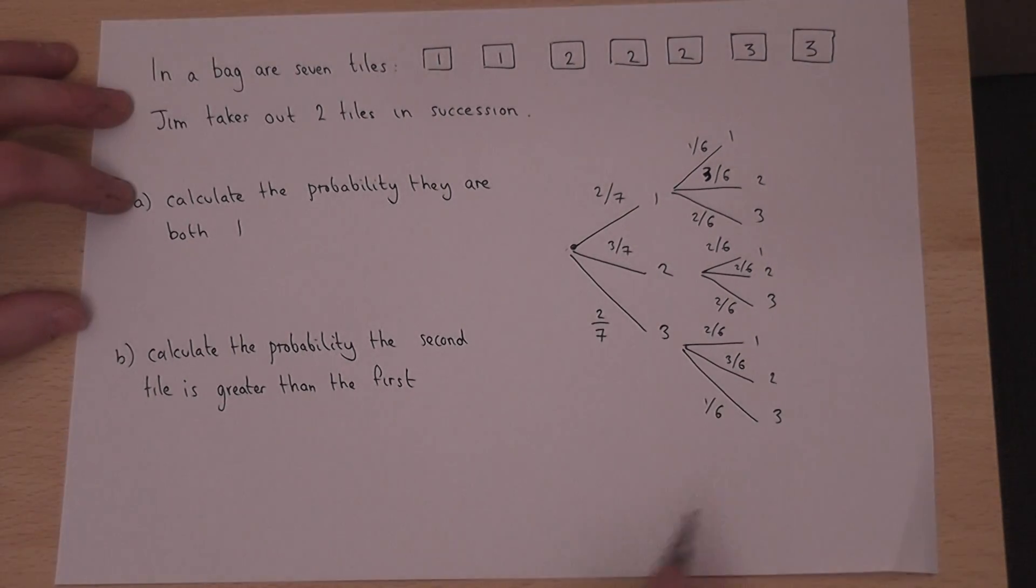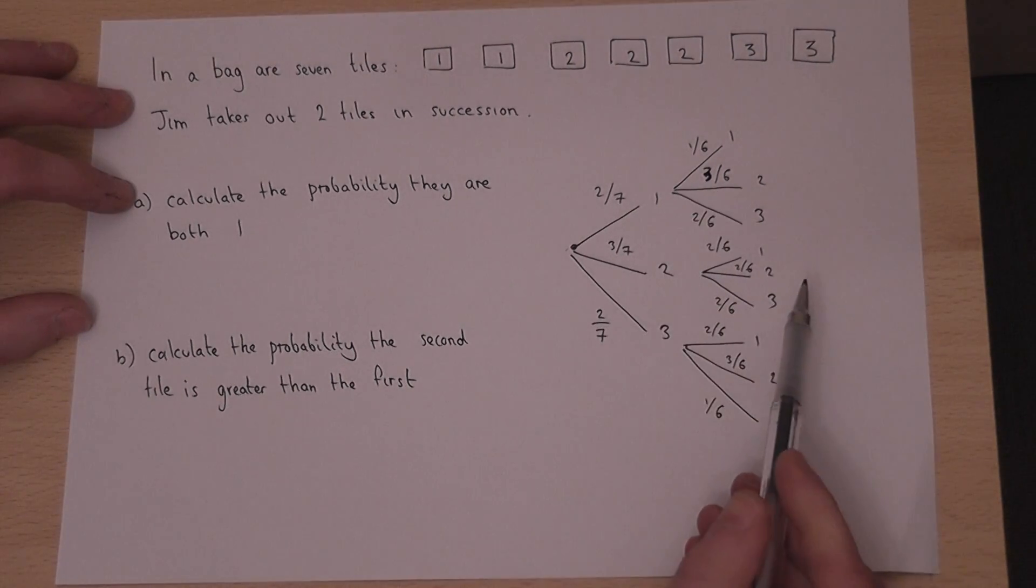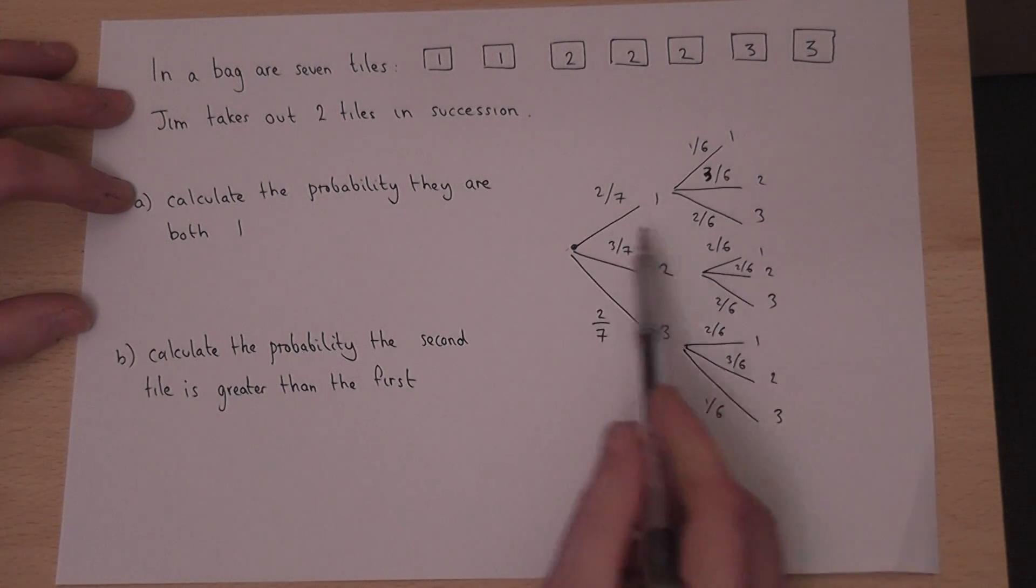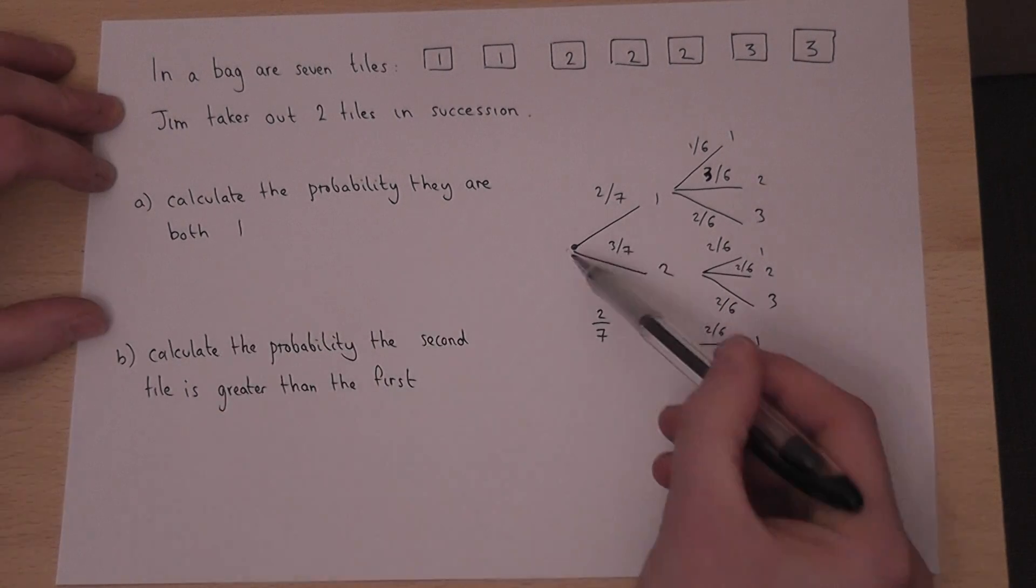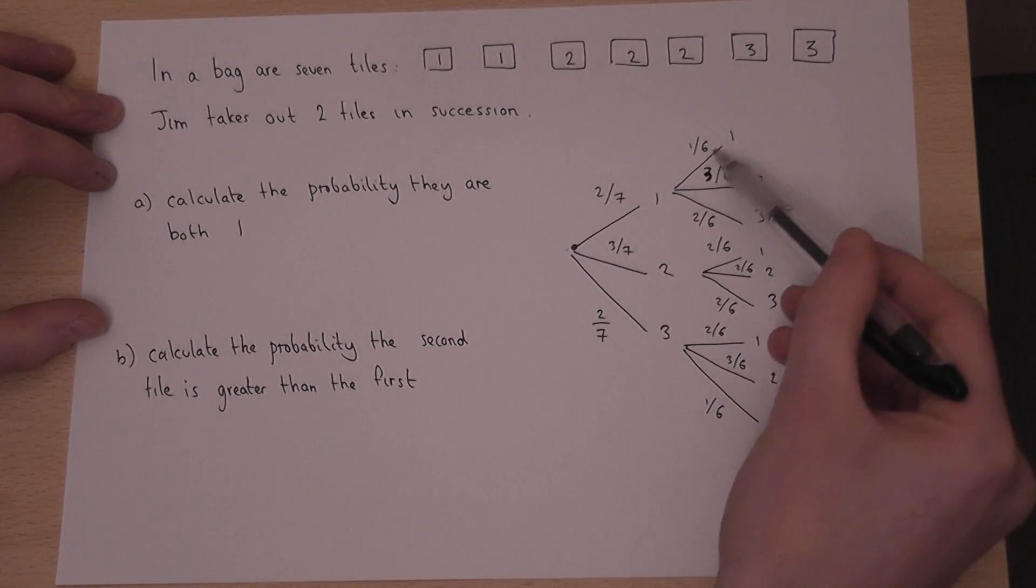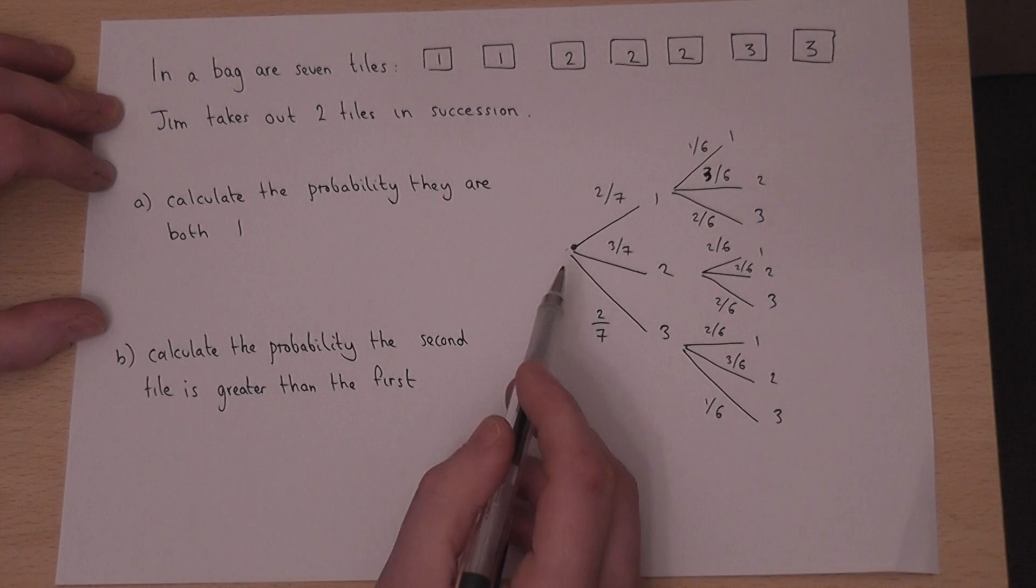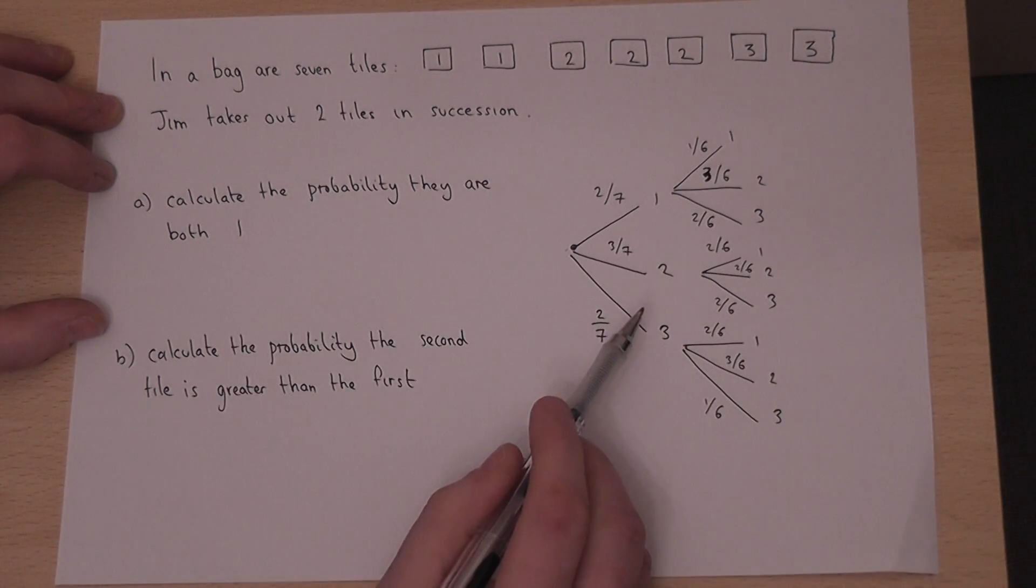So this tree diagram lists all the options with each of the fractions labeled clearly above the branches. Now the chance that they are both one is this option here through the tree diagram, and to work this out we just have to times together those two fractions.